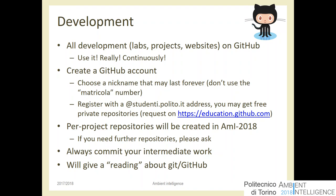When registering, use your official Politecnico email address. If you register with that address you will have free access to the full platform — private repositories — as a student discount. If you go to the relevant page and enter your account data, they will give you free private repositories. Normally GitHub is free as long as your projects are public; for private repositories you have to pay, except when you're a student.